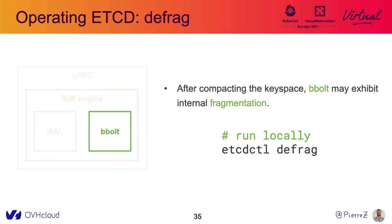Another operation that needs to be done on an etcd cluster is called defragmentation, and it's linked to how bbolt works internally. After compacting the keyspace, bbolt may exhibit internal fragmentation. To reclaim space you need to run defragmentation, and this can be run on the whole cluster or locally. In our case, we are running it locally in a rolling fashion.